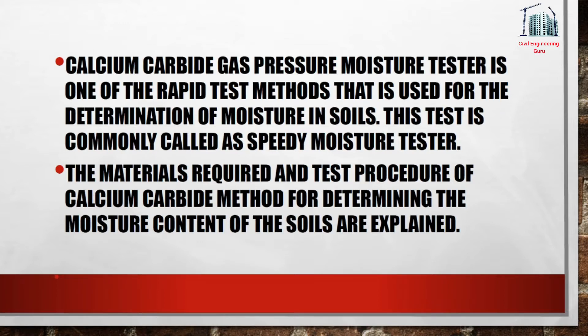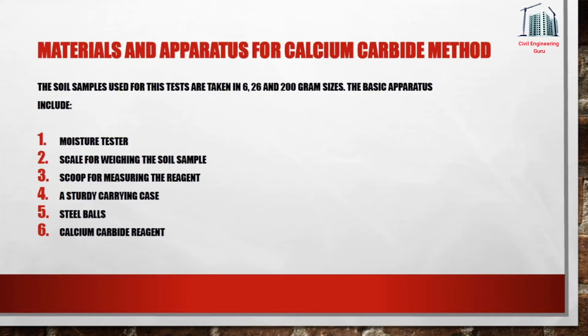The calcium carbide gas pressure tester is one of the rapid test methods used for determination of moisture in soils. This test is commonly called the speedy moisture tester. The materials required and test procedure of the calcium carbide method for determining the moisture content of soils are explained.